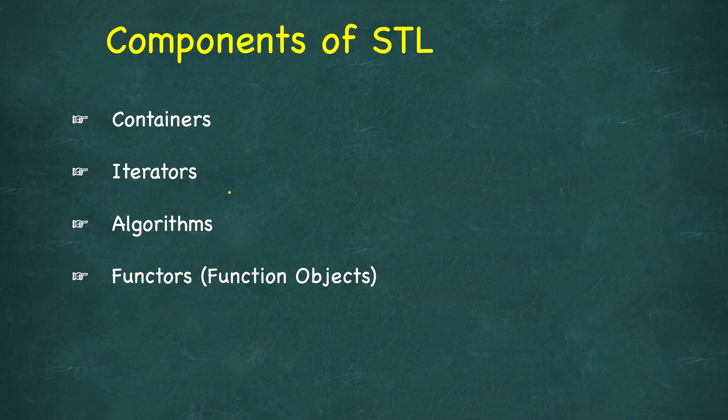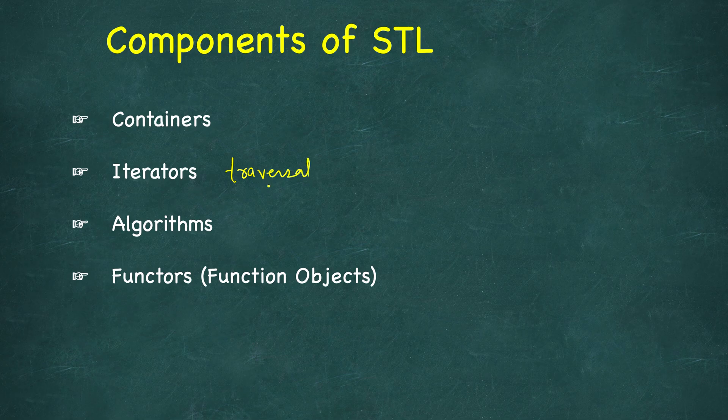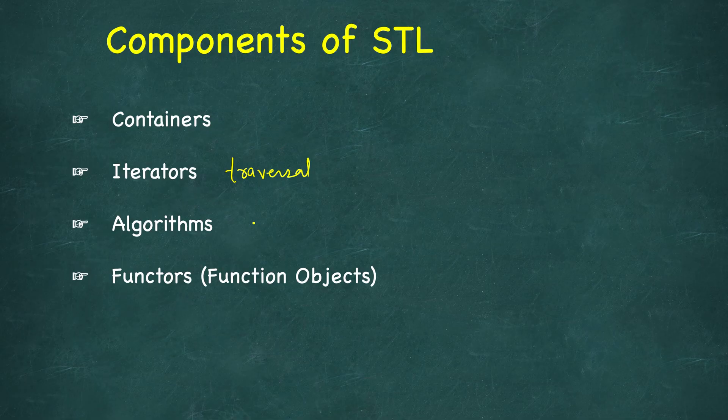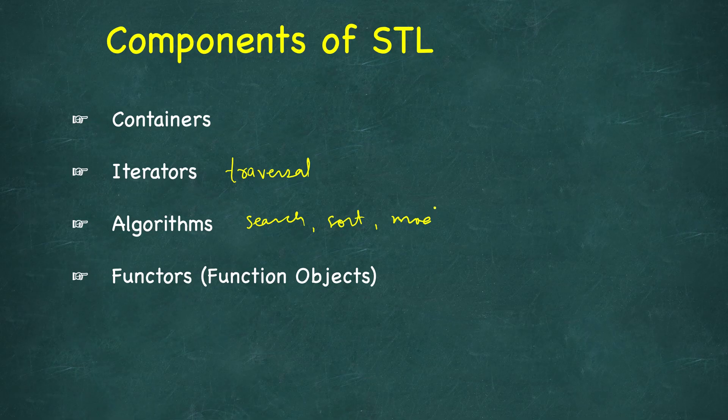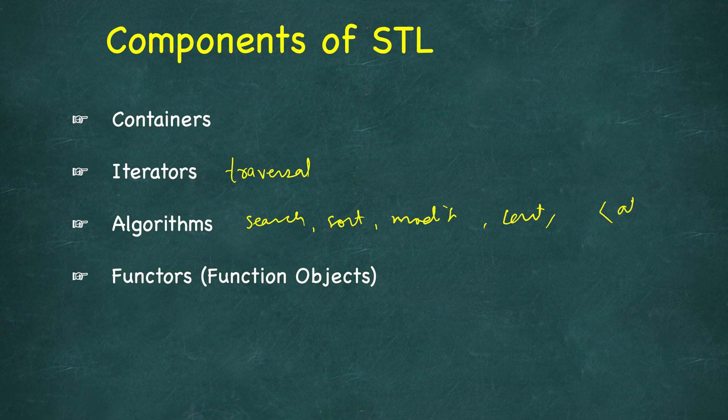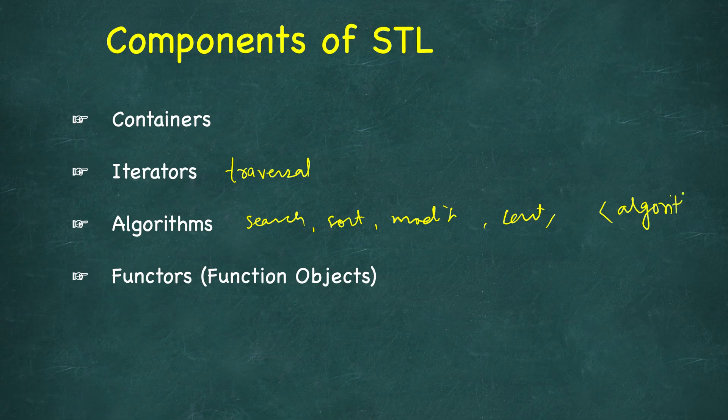They store collections of objects. Then we have iterators—these are pointer-like objects that allow traversal of containers. We will see different types of iterators in future videos. Then we have algorithms—these are a set of functions that are implemented in an efficient way and implement different algorithm operations such as search, sort, modify, count, etc. There are many many more algorithms.